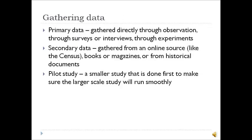We can gather many different types of data, which will be discussed more in another video. The two types you should know about right now are primary data and secondary data. Primary data is gathered directly through observation, surveys, interviews, or experiments — it is data that you as the researcher personally gathered. Sometimes we cannot obtain primary data, and secondary data becomes extremely useful. Secondary data can come from online sources like U.S. census records, state school records, books, magazines, or historical documents. The key distinction is that secondary data was gathered by somebody else, not you.